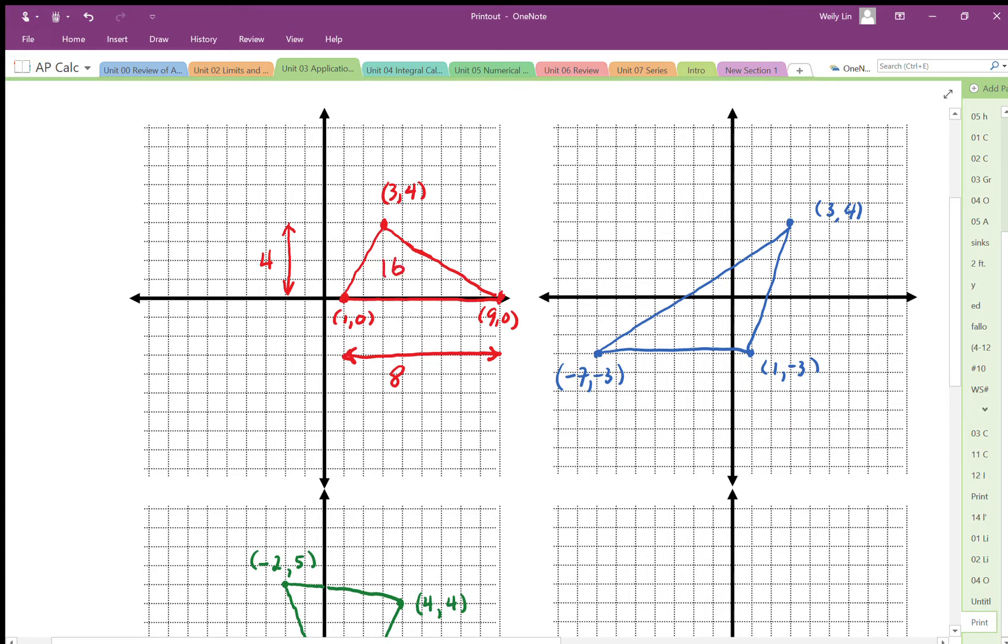So I can use these coordinates to find out this area, and it works like this. I'm going to take these coordinates and list them out in clockwise fashion, so I'm going to go 1,0, 3,4, 9,0, and I need an extra coordinate, so I'm just going to repeat the first one like that.